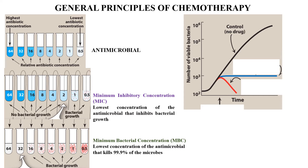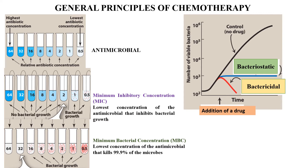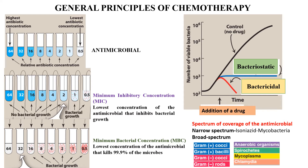Without a drug, bacteria multiply rapidly. When a drug is added, if there is a constant colonial count with no new growth, that is called bacteriostatic effect. If the colonial count reduces gradually, that is called bactericidal effect.